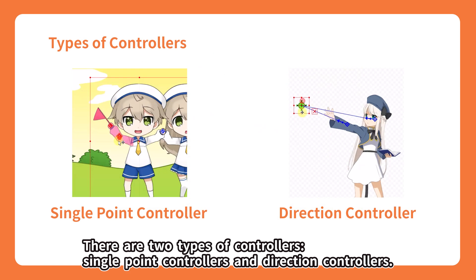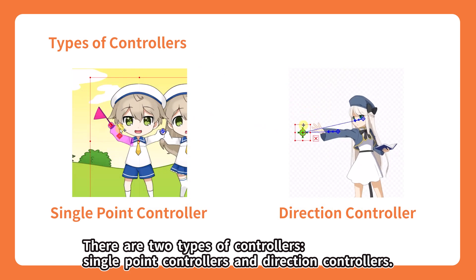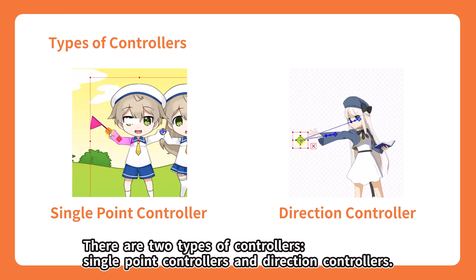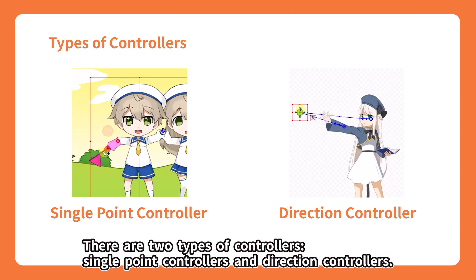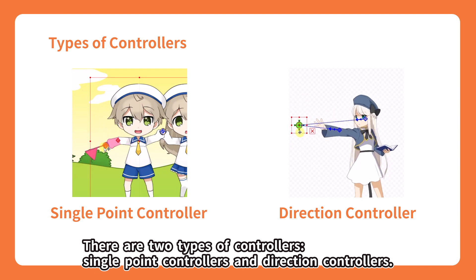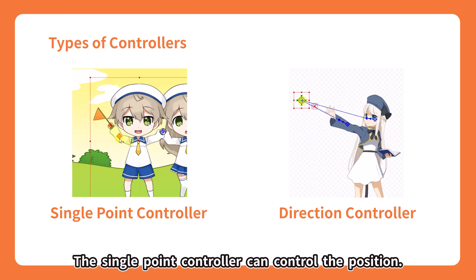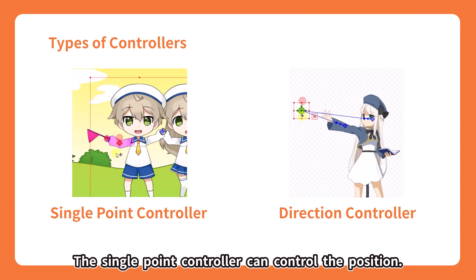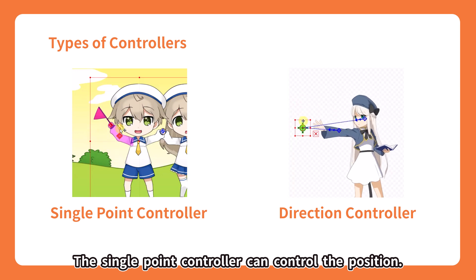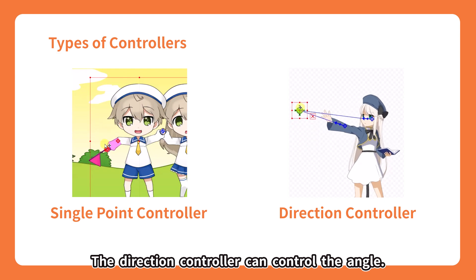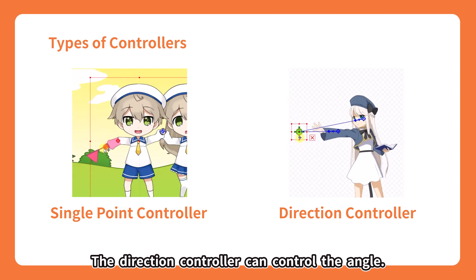There are two types of controllers: single-point controllers and direction controllers. The single-point controller can control the position, while the direction controller can control the angle.